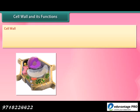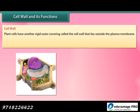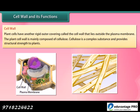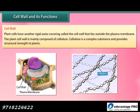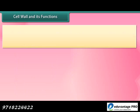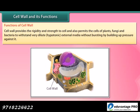Cell wall: Plant cells have another rigid outer covering called the cell wall that lies outside the plasma membrane. The plant cell wall is mainly composed of cellulose, which is a complex substance and provides structural strength to plants. The cell wall provides rigidity and strength to the cell, and also permits the cells of plants, fungi and bacteria to withstand very dilute hypotonic external media without bursting, by building up pressure against it.